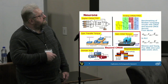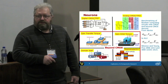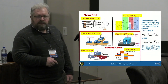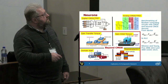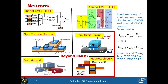Speaking of neurons, there are of course the well-known existing implementations in digital or analog CMOS. And then there are beyond-CMOS devices, mostly based on nanomagnetic devices, magnetoelectric, ferroelectric, and so forth. In the prior work on benchmarking of beyond-CMOS devices for Boolean computing, we were coming up with theoretical estimates of the physical parameters: area, delay, and energy for devices.